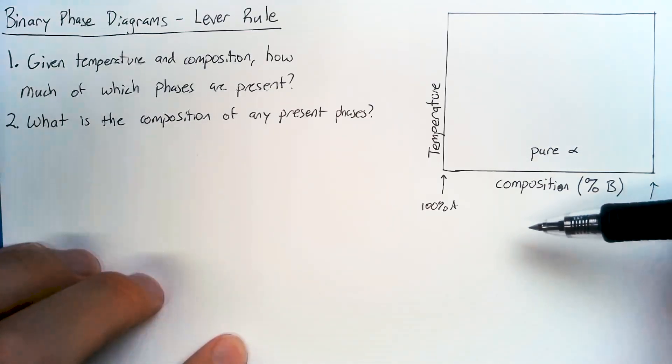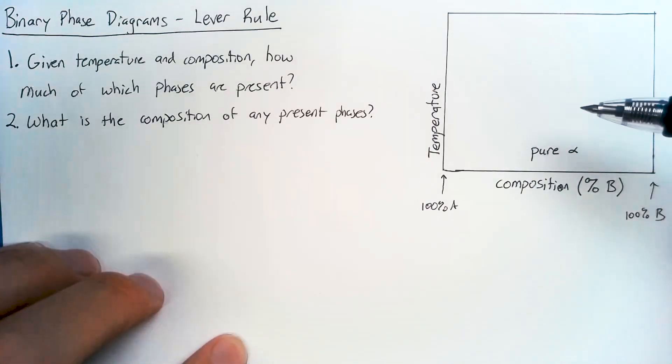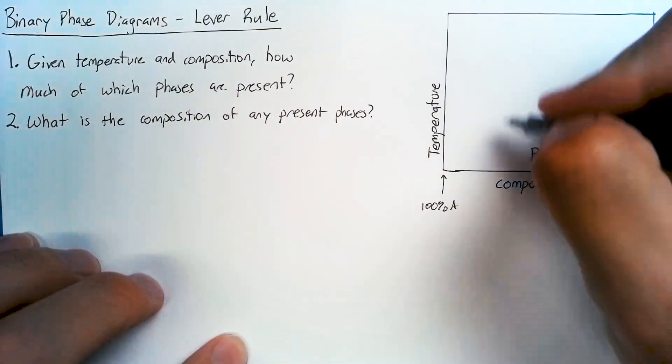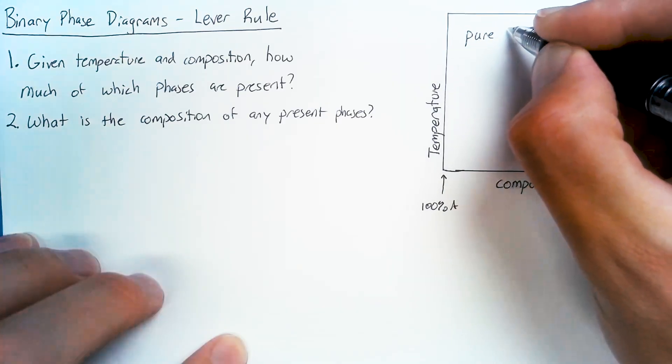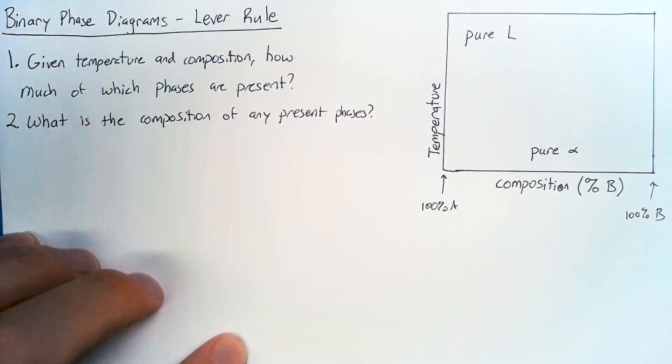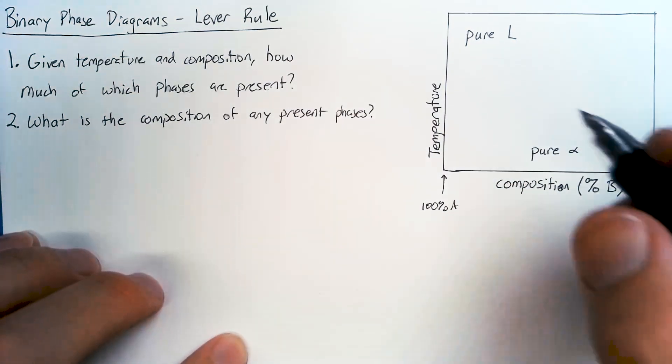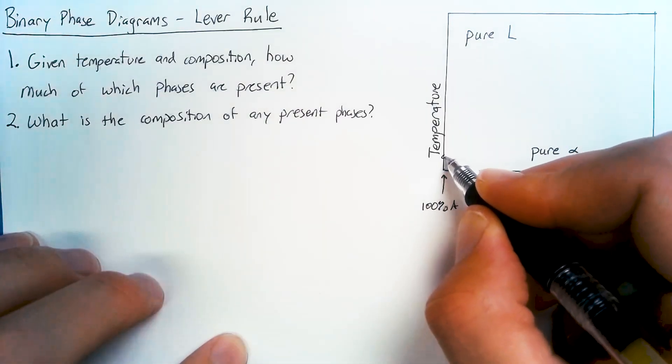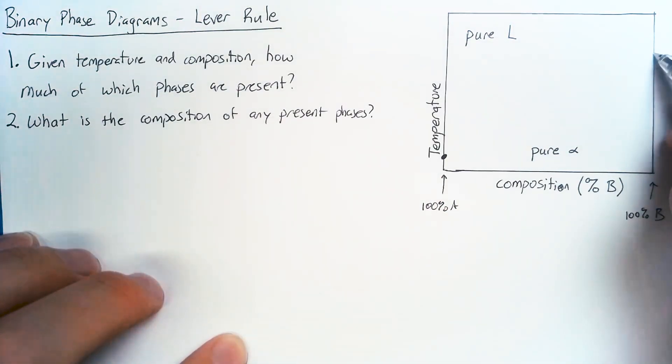Now, if we heat this up hot enough, the vast majority of materials that we're interested in will melt. And so if we get hot enough, then we're going to end up with a pure liquid. So what's interesting is A typically will melt at a different temperature than B.